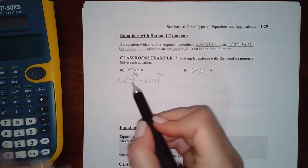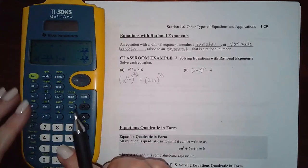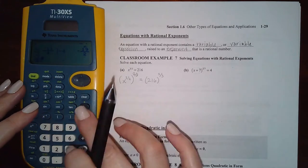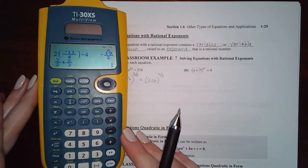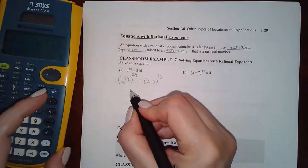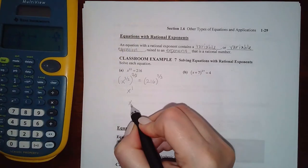So when you multiply these exponents together, what is three over two times two over three? It should be one because that's the property. So you get x to the one or just x.